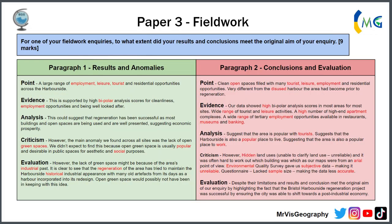For the nine-mark question, this is how I'd plan it. It says here: for one of your fieldwork inquiries, to what extent did your results and conclusions meet the original aims of your inquiry? The first paragraph I'd focus on results and anomalies, because it says results and conclusions. The second paragraph I'd do conclusions and evaluation, because that's the second half of the question.